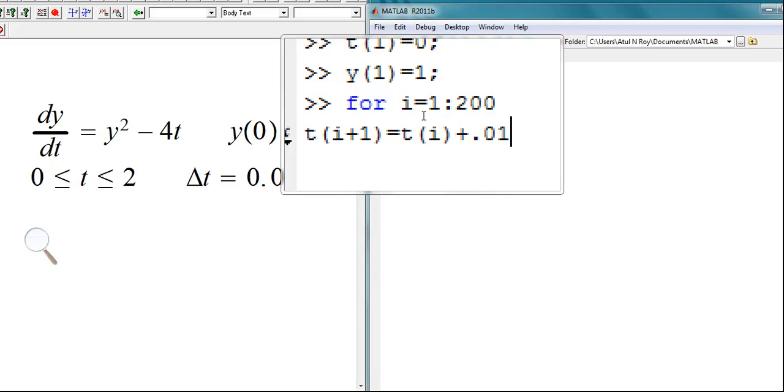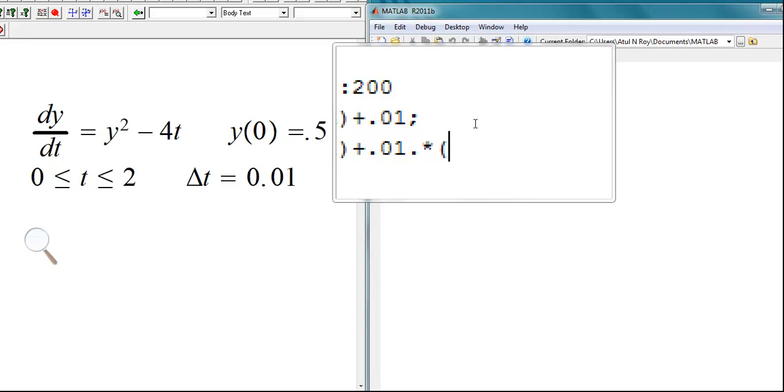For each subsequent value of t after the ith value, what we want to do is we want to add 0.01 and then when we go for the y value, so for y i plus 1, we want the previous y value.